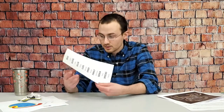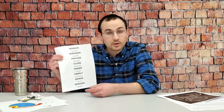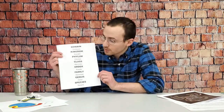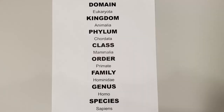For an example of this, if we're going to talk about people, we're in the domain Eukaryota, then kingdom Animalia, phylum Chordata, class Mammalia, order Primate, family Hominidae, genus Homo, and species sapiens.